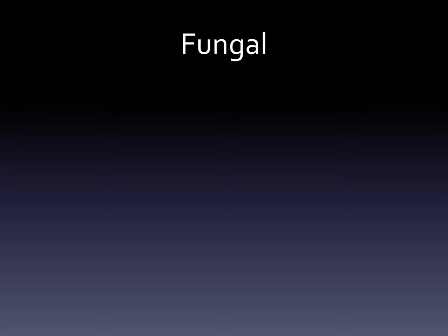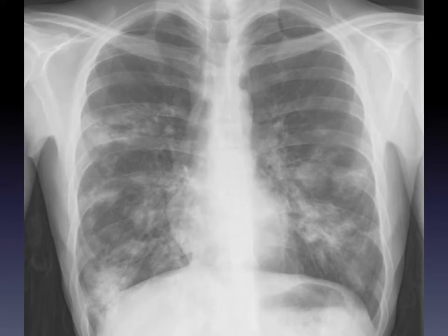The last type of pneumonia I wanted to mention is fungal infections, which can be very serious. The classic descriptor is that parts of the lung are really affected — very white, very dense — but other parts are not affected as much. Here, the top part of the lungs, the apex or apices, are darker. This is a very severe infection caused by fungus.